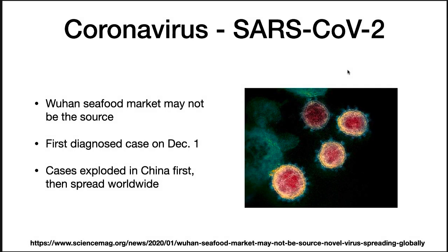There is significant controversy about whether animals in the seafood market in Wuhan, China were the source of this epidemic, or whether a person ill with the virus went to the market and increased its spread. The first case was diagnosed on December 1st in China and had no clear link to the market. There were another 13 out of the initial 41 cases that could not be linked to the market. So it really seems like this virus jumped to somebody who then went to this market where there are a lot of people, and then it spread from there.